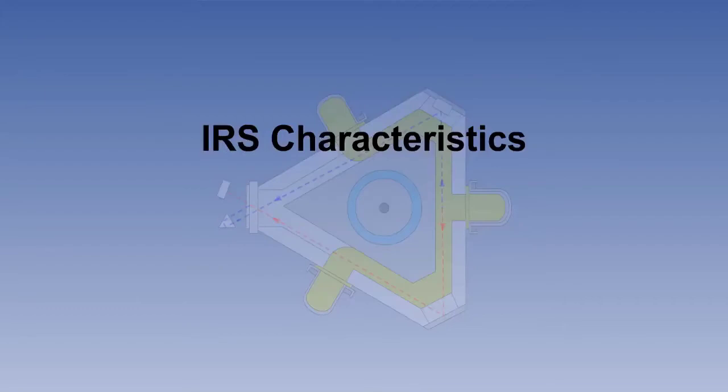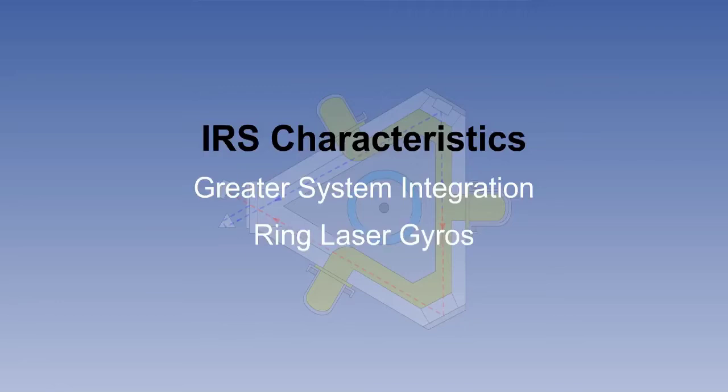There are three main characteristics which define what we now call an IRS, which make it recognizably different from a first-generation standalone INS. These are greater system integration, use of ring laser gyros, and much greater computer power. We'll look at each one of these in turn to see what has changed over the last 20 to 30 years.